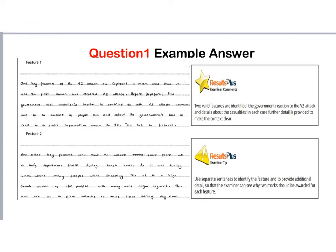Looking at an example answer, the candidate has identified a feature and then given a second sentence that develops it a little. They've done the same for the second feature. If anything, this candidate is writing slightly too much — you're just looking for identifying something about the event and giving a little more explanation. No more than two sentences per feature. This question is only worth four marks, so don't spend a huge amount of time on it. Save your time for later — no more than five minutes.